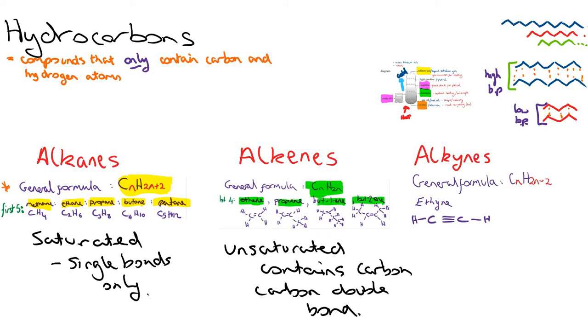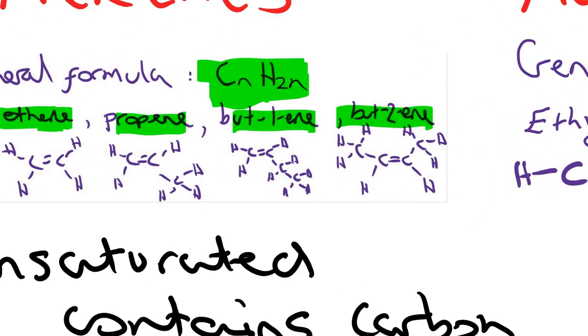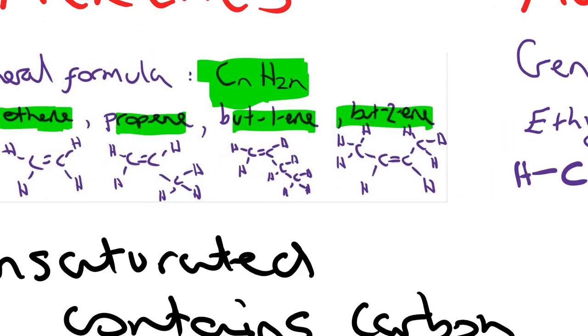So we're going to have a closer look at but-1-ene and but-2-ene, just the naming of them. So if you look at but-1-ene and but-2-ene, the reason I've called them 1 and 2 is because these are actually structural isomers.